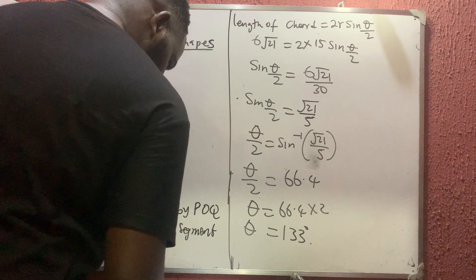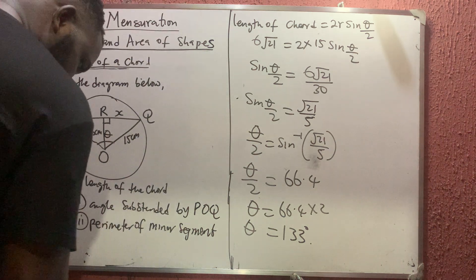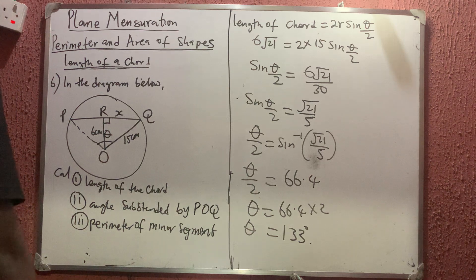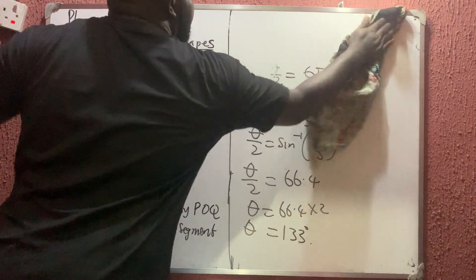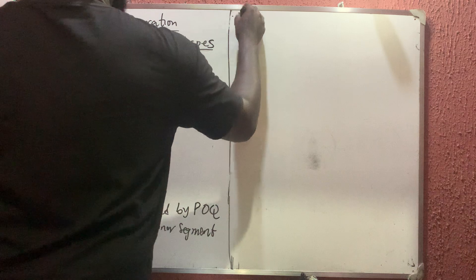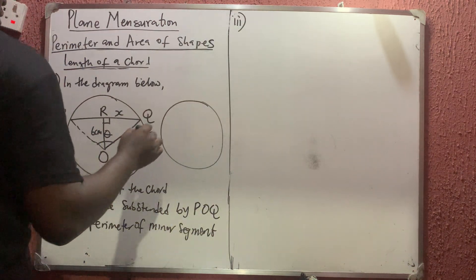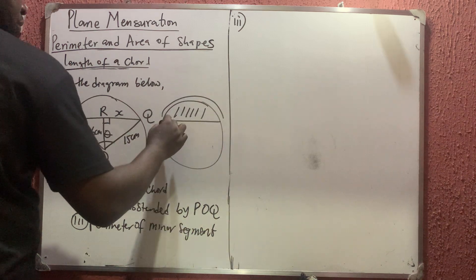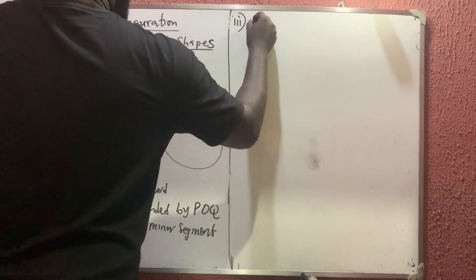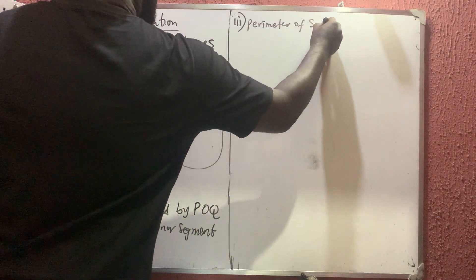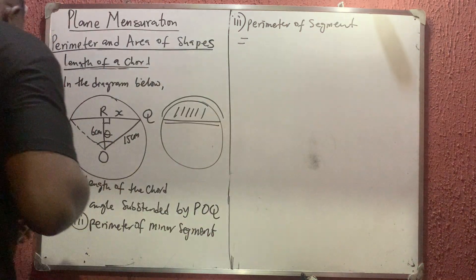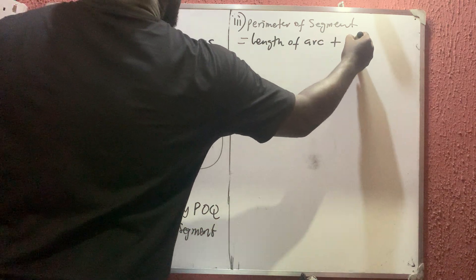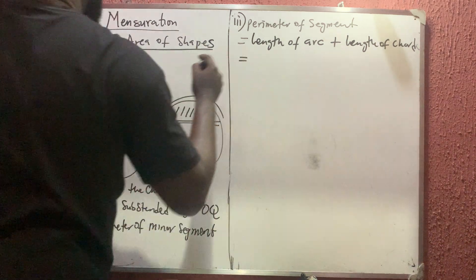Now for the last part — the perimeter of the minor segment. The perimeter of the minor segment equals the length of the arc plus the length of the chord. The segment is bounded by the arc on one side and the chord on the other.